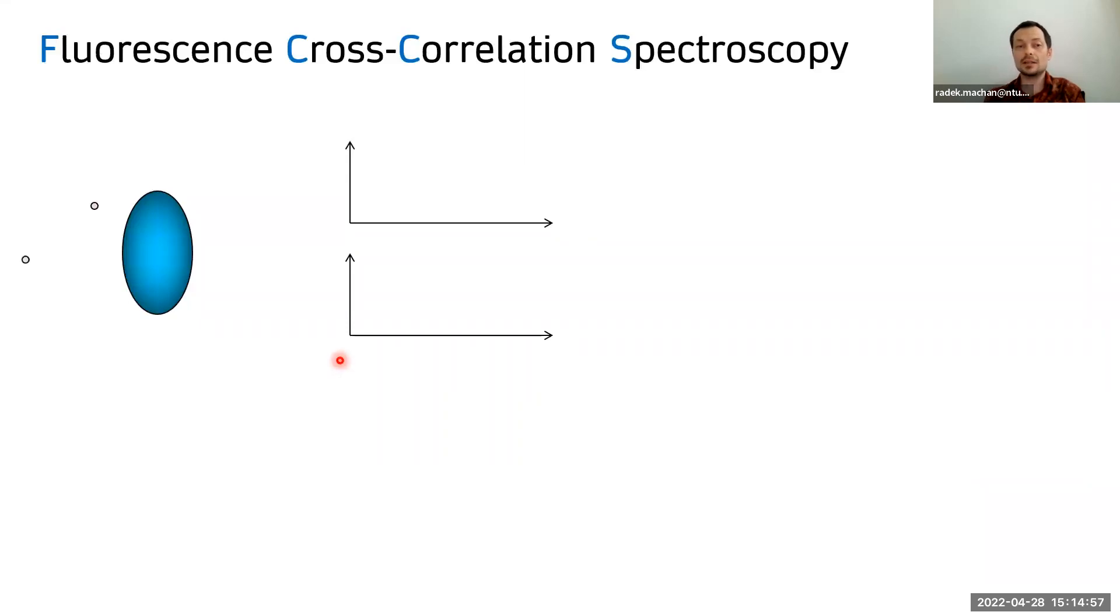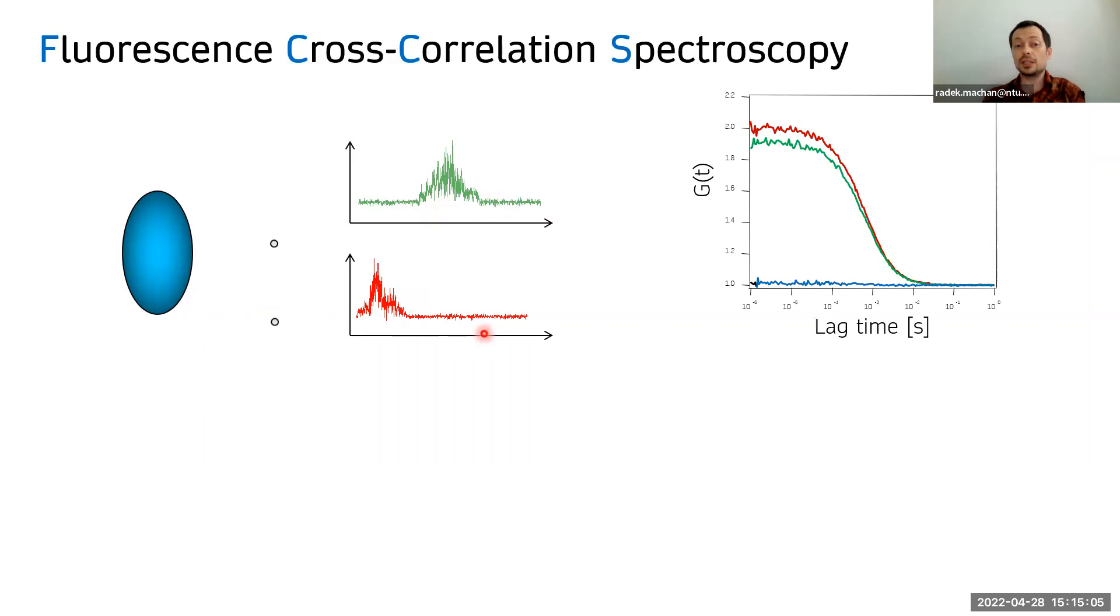We can do this in two colors. So if we have fluorescent particles labeled by different fluorophores, we can see the bursts in two different channels. And if the particles move independently, there is no correlation between the bursts in the two channels.